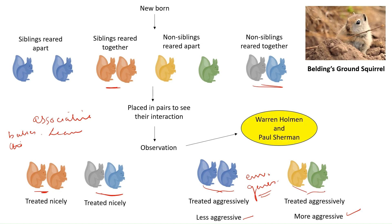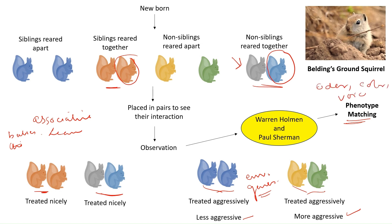From such observations, researchers Warren Holman and Paul Sherman termed such kin discrimination as phenotype matching. This means squirrels identify family members through a particular phenotype — either through body odor, color, or voice. Because from the beginning they are surrounded by such phenotypes, they associate that members sharing those phenotypes are their siblings.